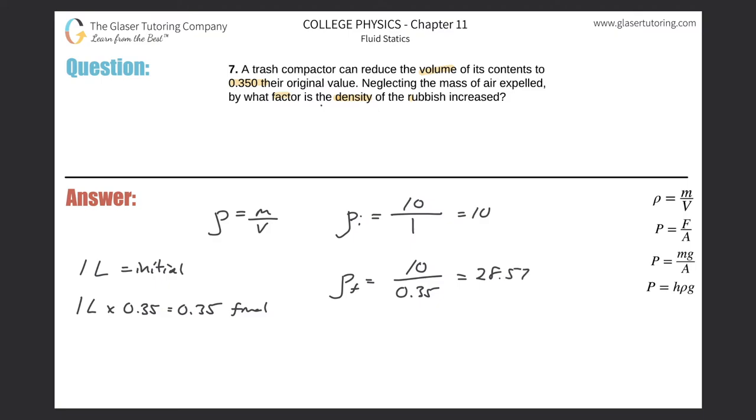And now we're almost done. But now it said by what factor is the density of the rubbish increased? So obviously we see it has gone up. And by how much? How many times?